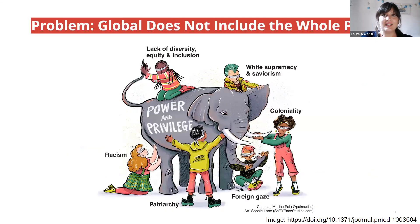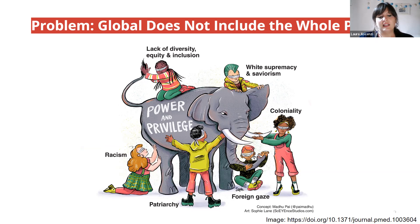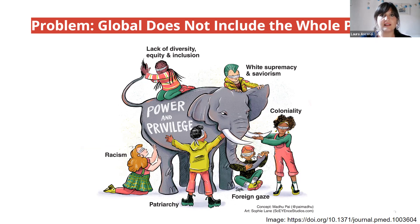Let's say hello to the elephant in the room. Global doesn't include the whole planet. That elephant comes from asymmetric power and privilege in some regions. This cartoon is about global health, but applies to open science too. On the bottom of the slides, you will find the sources. Including the whole planet will entail tackling lack of diversity, equity and inclusion. For us, open science's real promise lies in offering not only access, but agency as first-class participants and co-creators to people from all nations.